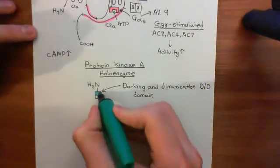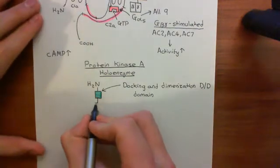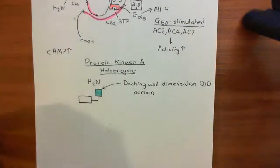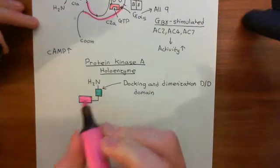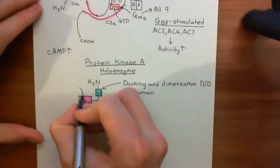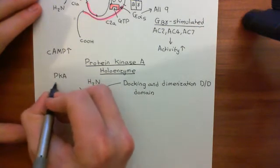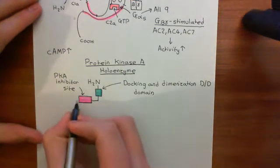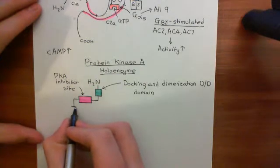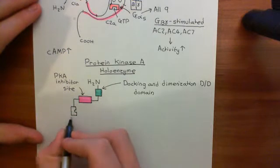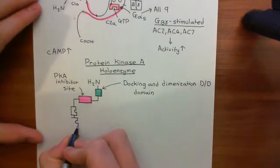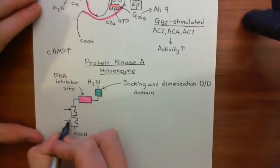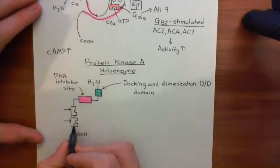The next important domain is going to be a protein kinase A inhibitor site — abbreviated pKA inhibitor site — which is going to be involved in inhibiting the catalytic subunits of protein kinase A. After that, you have two cyclic AMP binding domains which are in tandem, meaning they are next to each other. These are the sites where cyclic AMP will bind.